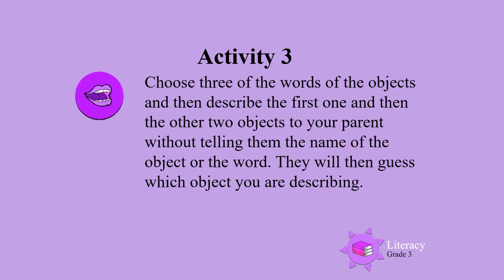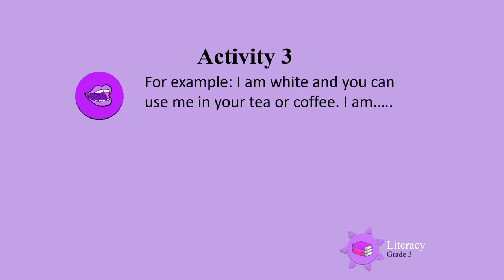Activity 3. Choose three of the words and objects, and then describe the first one, and then the other two objects to your parent, without telling them the name of the object or the word. They will then guess which object you are describing. For example: I am white, and you can use me in your tea or coffee.